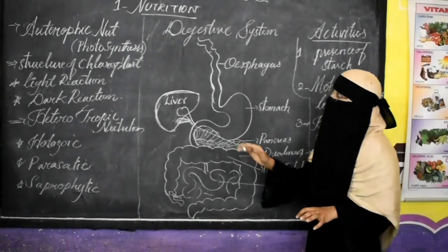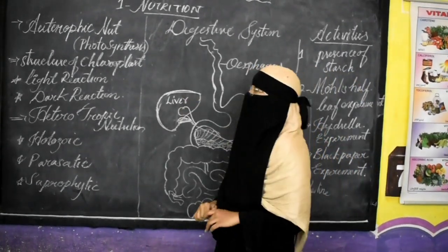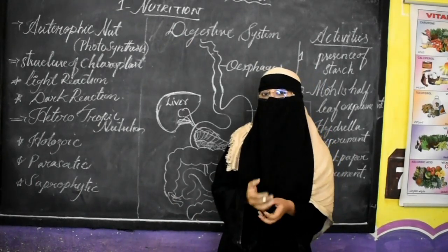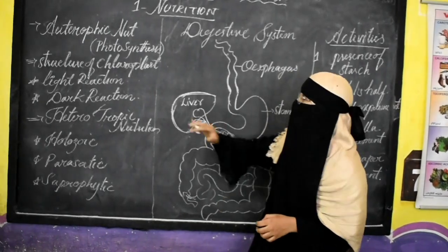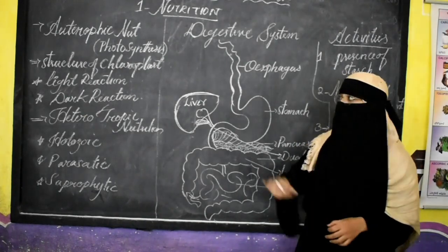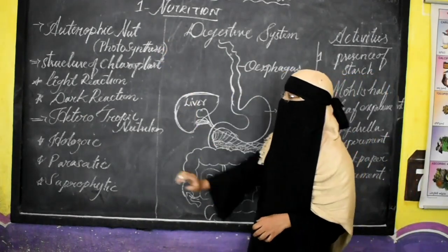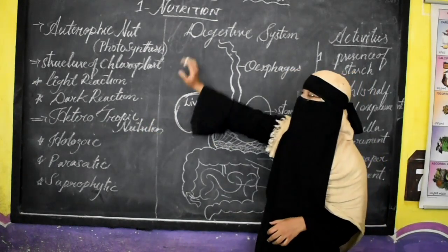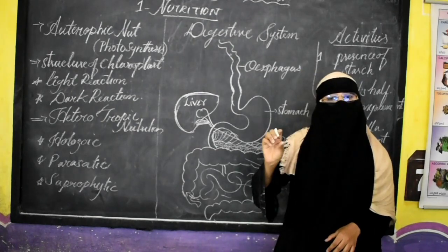Nutrition is nothing but the entire intake of nutrients and the accumulation or procurement of nutrients. Nutrition is divided into two types: the first one is autotrophic nutrition and the second one is heterotrophic nutrition. Autotrophic nutrition is further divided into two more types — chemo-autotrophic nutrition and photo-autotrophic nutrition.